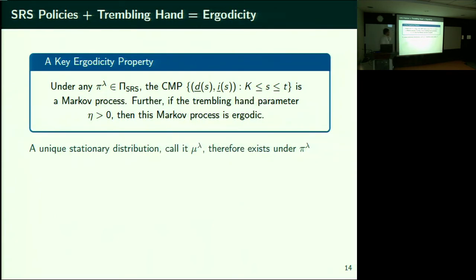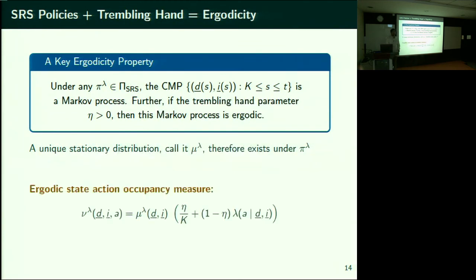So η positive is mainly for this exploration — there is a strictly positive probability of selecting each arm at any time instant. Now I'm going to show you the lower bound. We've built all the language. With this, what is the lower bound?